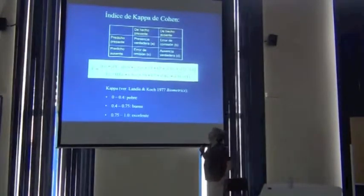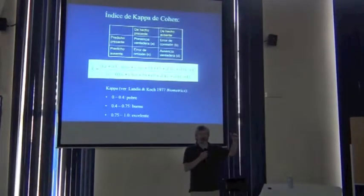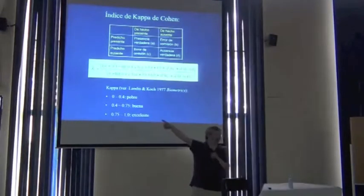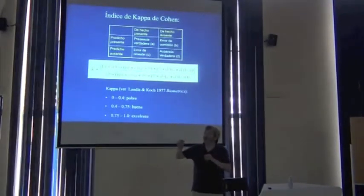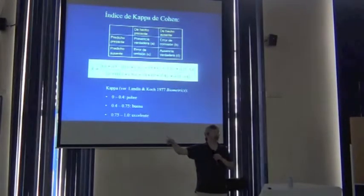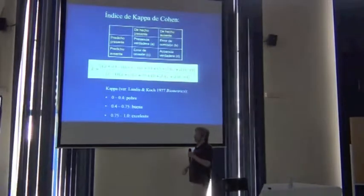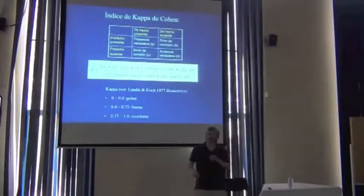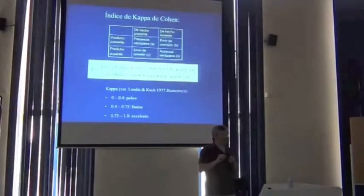What kappa is doing is measuring predictive performance taking into account what was expected at random. Think of my whiteboard covering 20% of the wall — I expect at random a 20% success rate, and kappa expresses improvement above and beyond that. But if you look carefully, kappa weights A and D the same, and B and C the same, and that's undesirable.